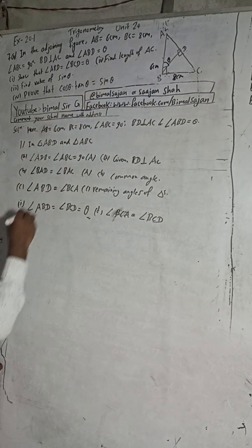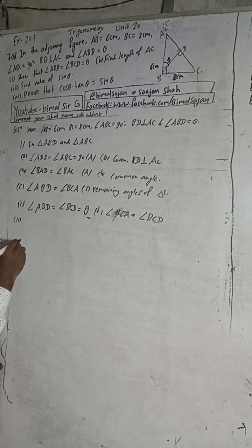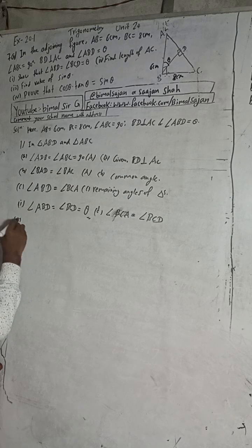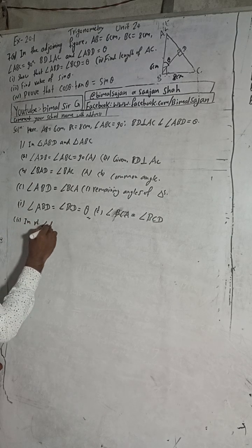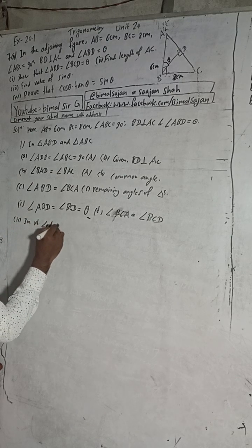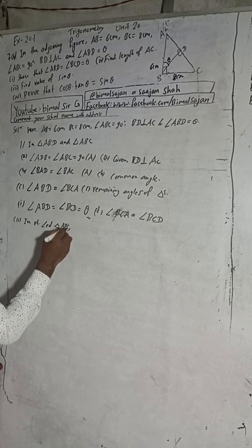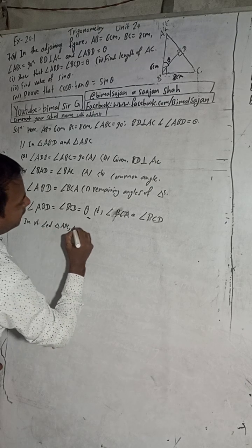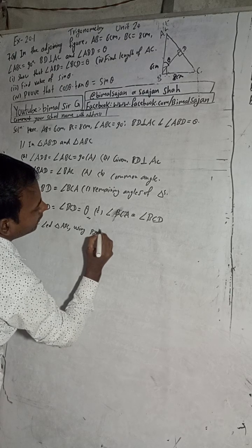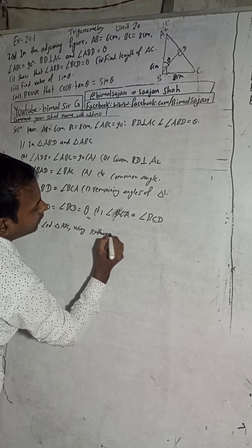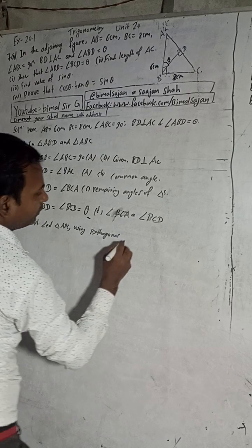Number 2: find AC. In right angle triangle ABC, we use the Pythagoras theorem.